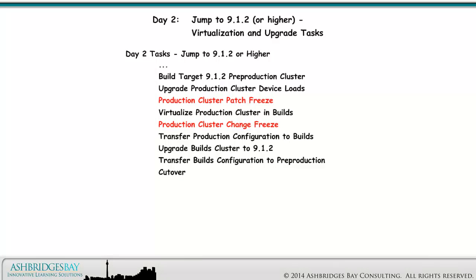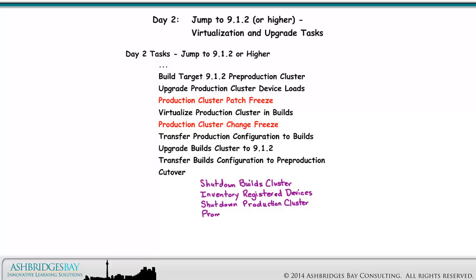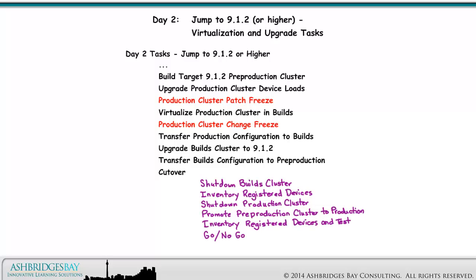Here are some considerations for the production cluster change freeze. Shut down Builds cluster, Inventory Registered Devices, Shut down Production cluster, Promote pre-production cluster to production, Inventory Registered Devices and Test, Make the go/no-go decision, and Run ELM Migration Utility.